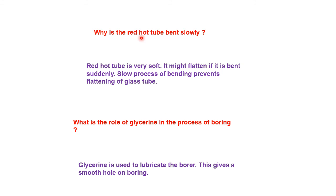Why is the red hot tube bent slowly? A red hot tube is very soft — it is almost liquid in state. It might flatten if bent suddenly. A slow process of bending prevents the flattening of the glass tube. That's why we have to bend slowly when the glass is in red hot condition, so that a proper bend is made and a proper delivery tube — L shape or V shape — is formed as per the requirement.